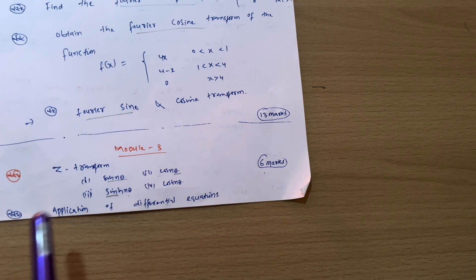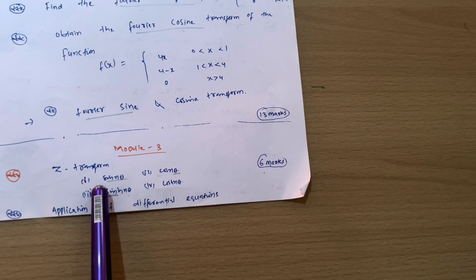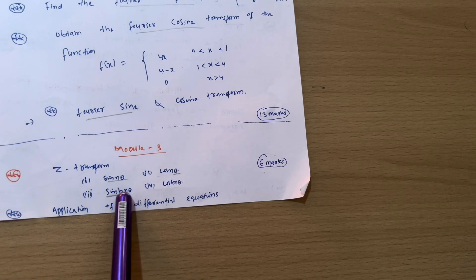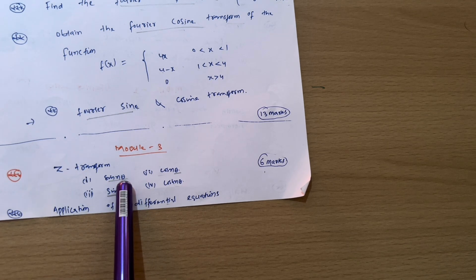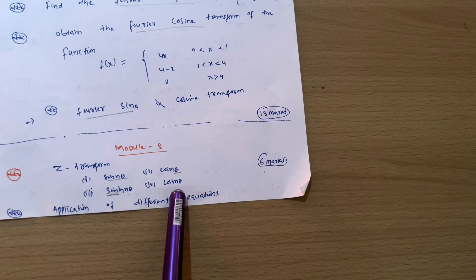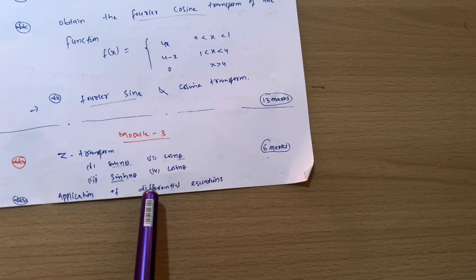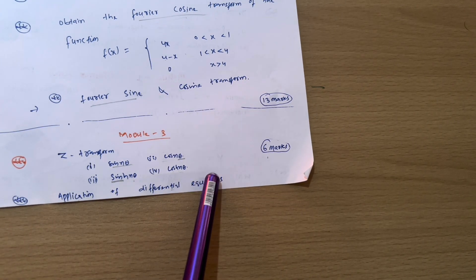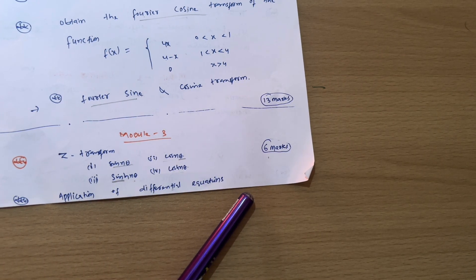So next we have module 3rd in which you have to go through z-transform. So most of the times we are asking these particular questions like sine nθ, obtain the z-transform for sine nθ, cos nθ, or sometimes sinh nθ, cosh nθ. So this is the 6 marks question. And also you have to go through application of differential equations. For this particular topic you should practice 3 to 4 problems from previous question papers.